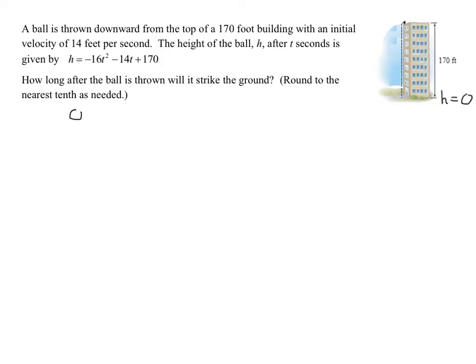So I'm going to get zero, because that's my height, equals negative 16t squared minus 14t plus 170. So there's my quadratic equation that I need to solve. Whether I solve this equation by factoring or using the quadratic formula, it's a lot easier if my leading term, my squared term, is a positive term instead of a negative term. So what I'm going to do is multiply both sides by negative 1. And so that's going to give me 0 equals 16t squared plus 14t minus 170.